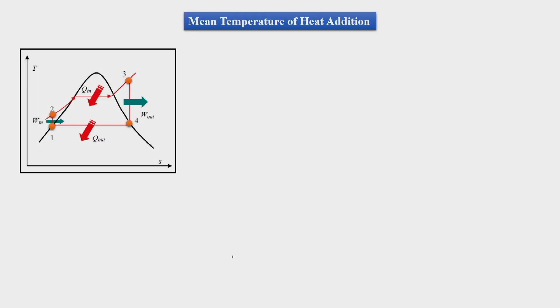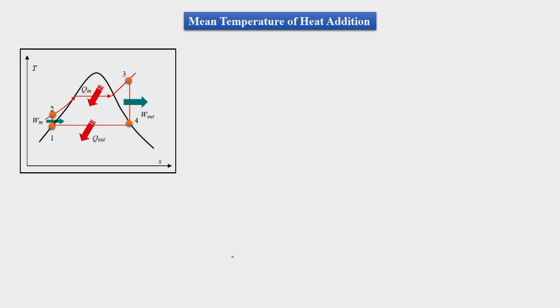The first thing we will discuss today is the mean temperature of heat addition. We know that the Rankine cycle is comprised of 4 processes, in which process 2 to 3 is heat addition at constant pressure. However, the temperature varies — sensible heat is added in the economizer, latent heat is added in the evaporator, and additional heat in the superheater.